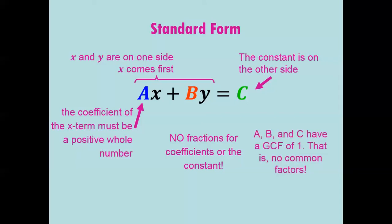In addition, a, b, and c have to have a greatest common factor of 1. What that means is there can't be any common factors to a, b, and c. If there's a number that could divide out of a, b, and c, then that needs to be done to further simplify it so that it can be considered standard form.